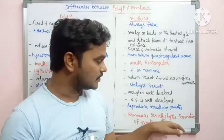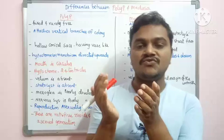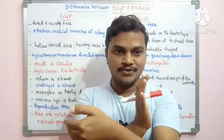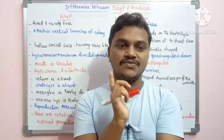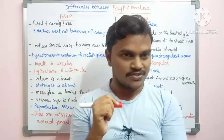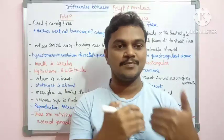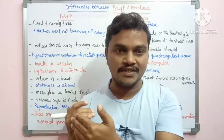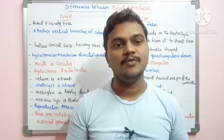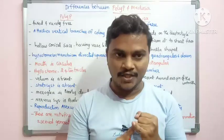Medusa produces polyp, and polyp produces Medusa. This type of generation is called alternation of generations, which we can observe in Obelia genoculata. Obelia genoculata shows polymorphism with both polyp and medusa forms.